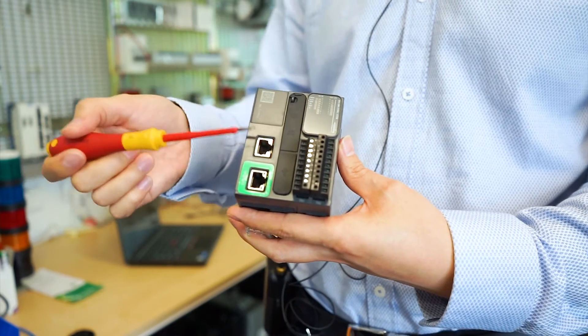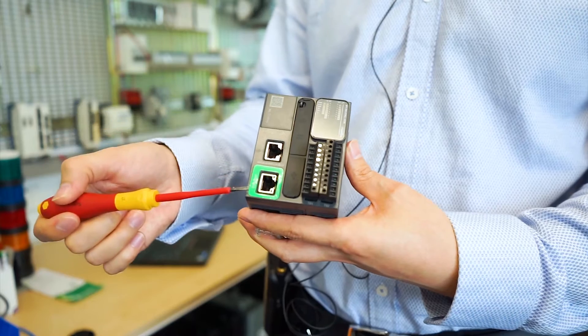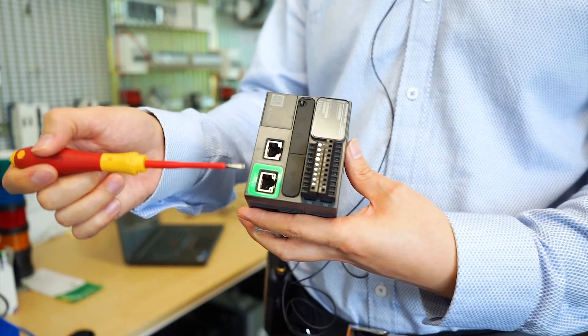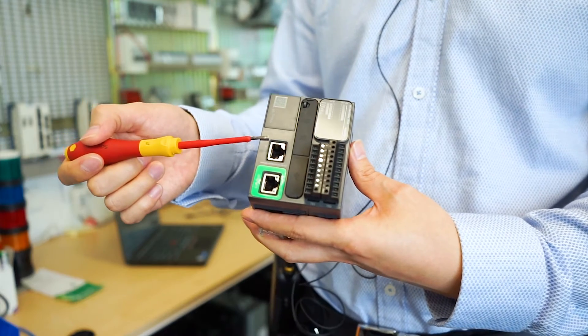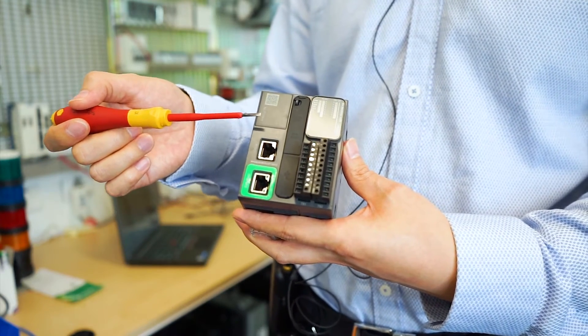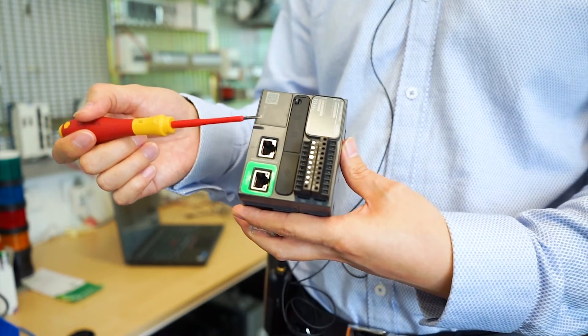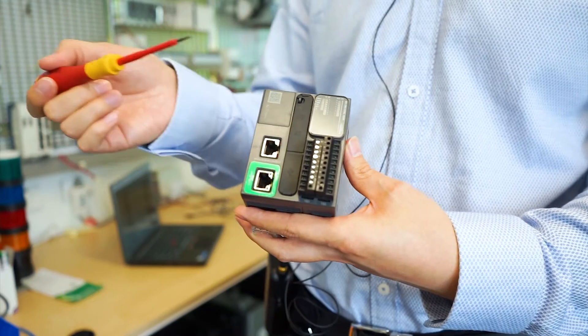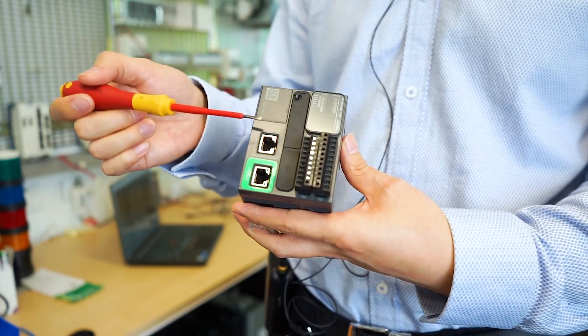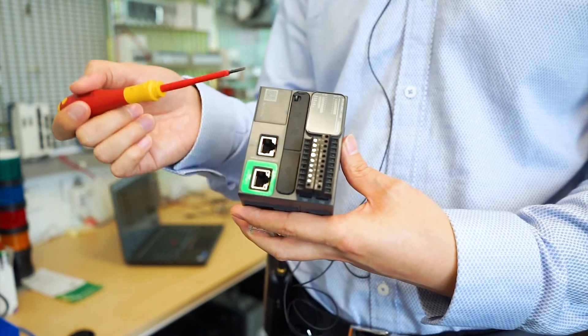And down there, we have two RJ45 ports. The top one is the serial port and then the bottom one with the green label is the ethernet port. Make sure you use the serial cable to connect it to the computer or to the HMI or other Modbus devices. Make sure you don't use the ethernet cable because that might damage the PLC.